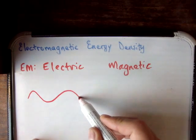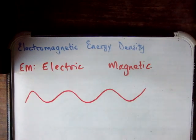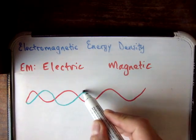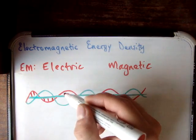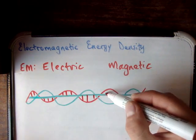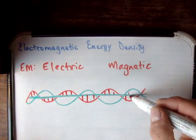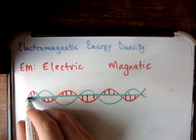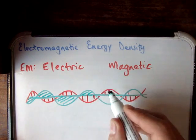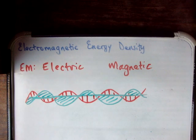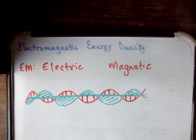The usual picture people have is something that looks like this — the red might be the magnetic field — and they're perpendicular to each other, and they're always making each other.